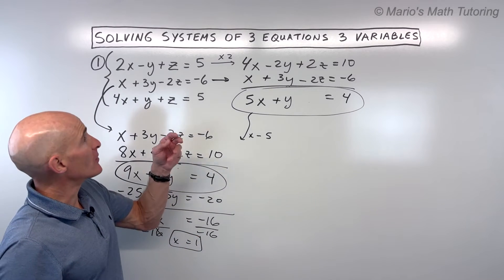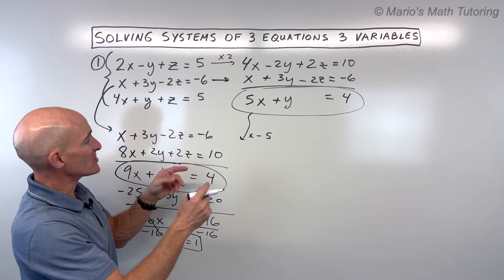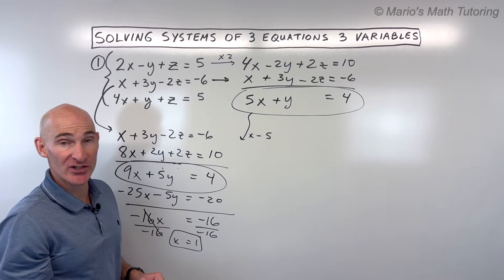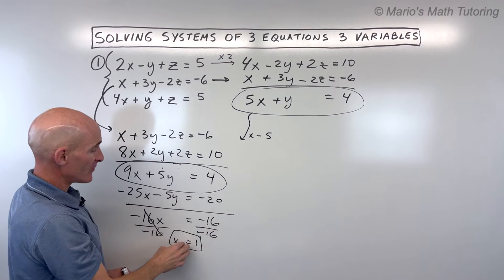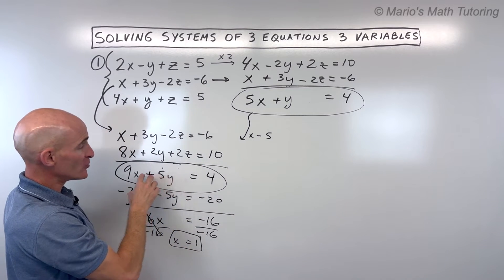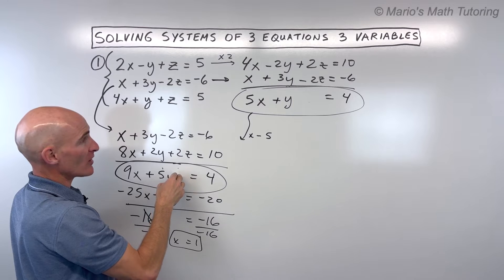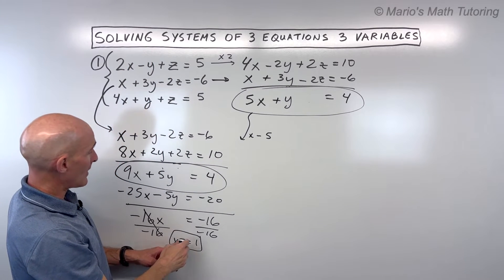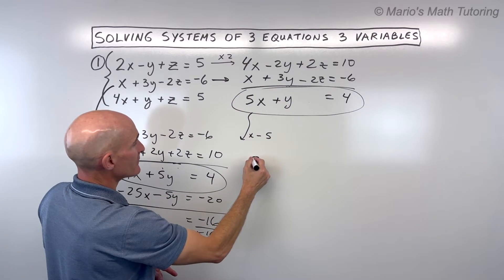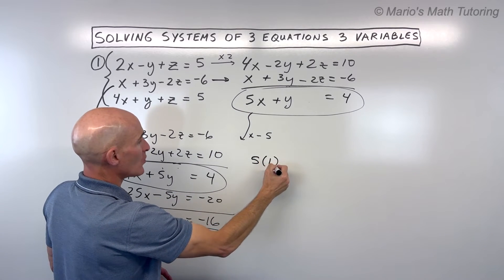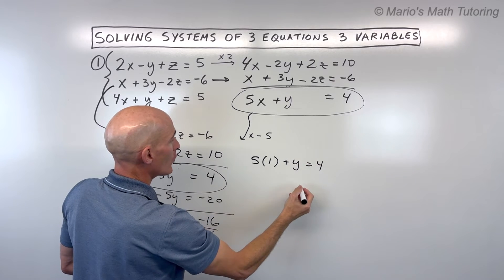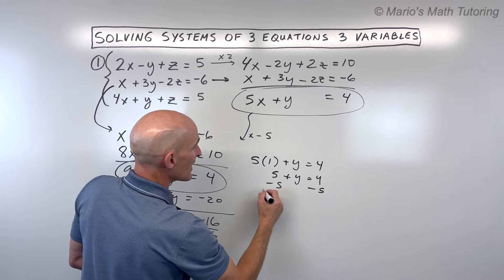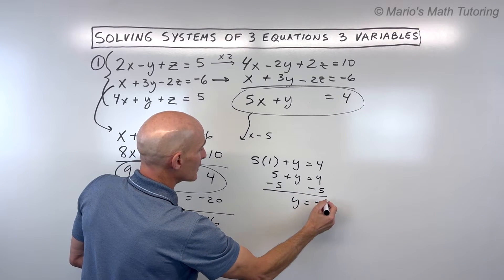Notice what happened: we went from 3 variables, 3 equations, down to 2 variables, 2 equations, down to 1 variable, 1 equation. Now we're going to go backwards. Plugging x equals 1 into the two-variable equation: 5 times 1 plus y equals 4, so 5 plus y equals 4. Subtracting 5 from both sides gives y equals negative 1.